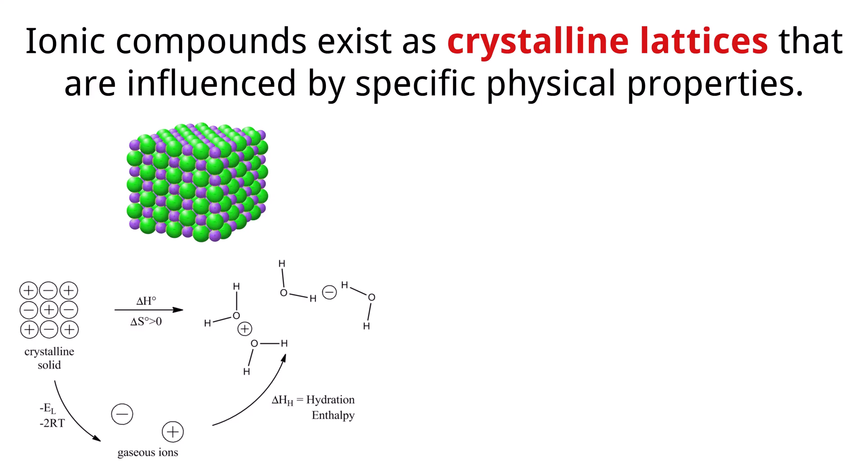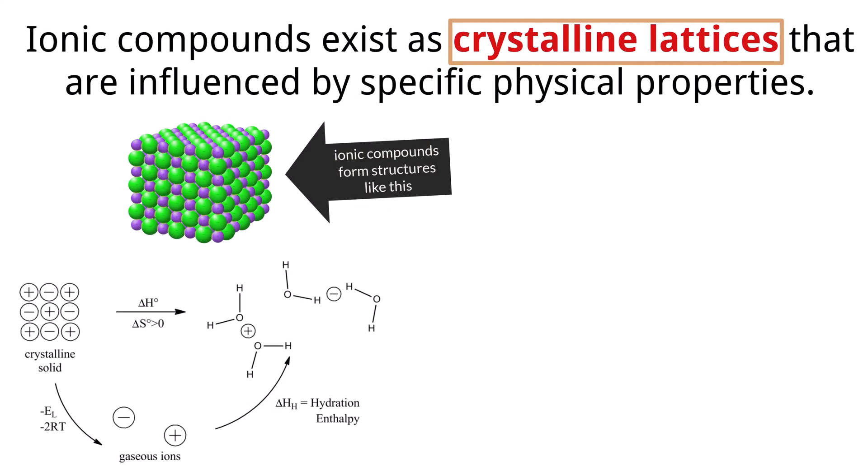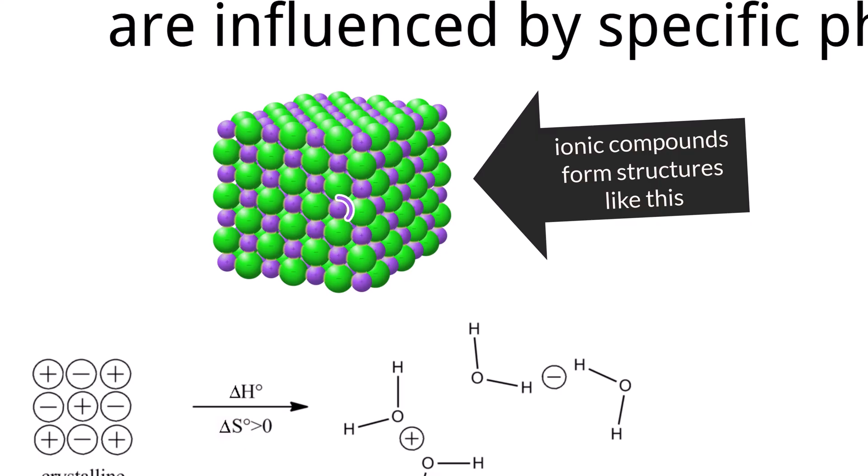Unlike molecules that exist as discrete units, ionic compounds typically exist as vast, repeated three-dimensional arrays of cations and anions, called crystal lattices. Imagine a highly organized structure where each positive ion is surrounded by negative ions, and each negative ion is surrounded by positive ions, all held together by strong electrostatic forces. This lattice structure extends in all three dimensions, creating a rigid and ordered arrangement.